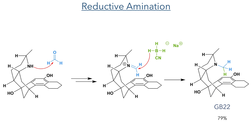With this in hand, they then carried out a reductive amination using formaldehyde. This first forms an iminium ion which was then reduced in a one-pot sequence using sodium cyanoborohydride. This installed the desired methyl group in a 79% yield, completing the synthesis of GB22.